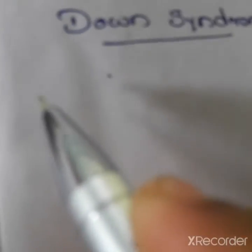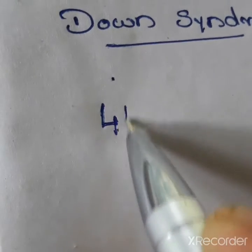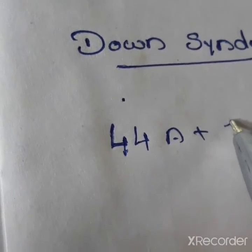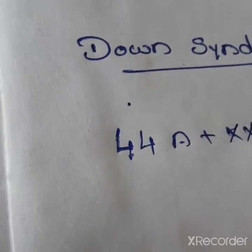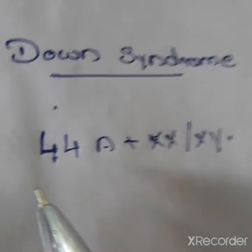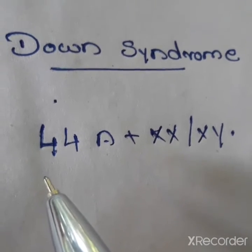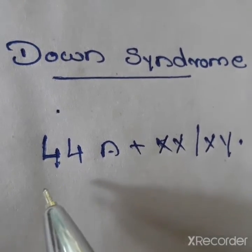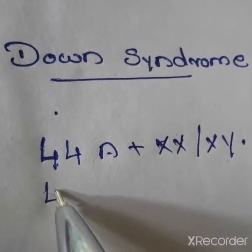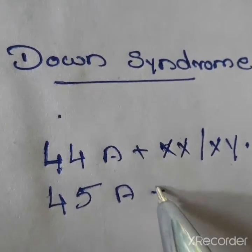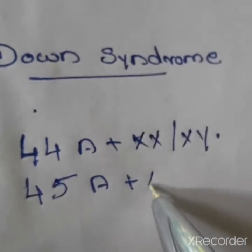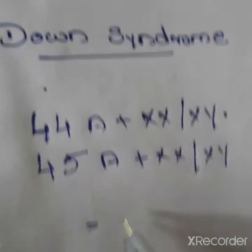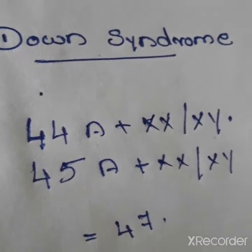In a normal case there are 44 autosomes and one pair of sex chromosomes (XX or XY). In Down syndrome, the cause of this genetic disorder is the presence of an additional copy of chromosome number 21, called trisomy 21. One more chromosome is joined, so the total number of chromosomes becomes 47: 45 autosomes plus XX or XY.